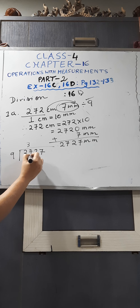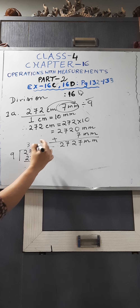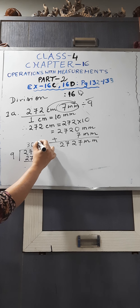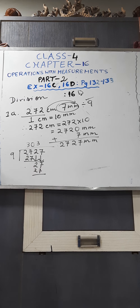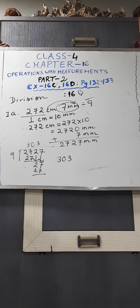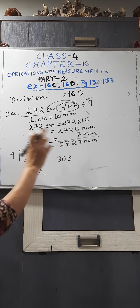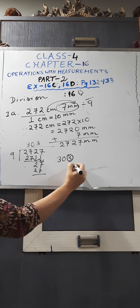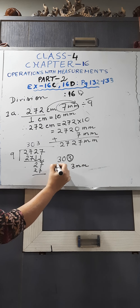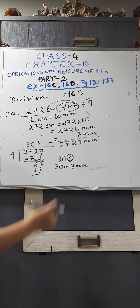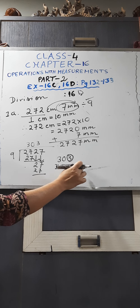We are going from bigger to smaller unit — centimetre to millimetre. More millimetres are there: 7 millimetre, so you will add that. Your result comes as 2727 millimetre. Now divide by 9: 9 threes are 27; 2 comes down — as 2 is smaller, put a 0 and bring down the next digit 7; 9 threes are 27. Our answer comes as 303. We have to write it separately: centimetre to millimetre is one step, so last one digit from the right is millimetre. Answer: 30 centimetre, 3 millimetre.